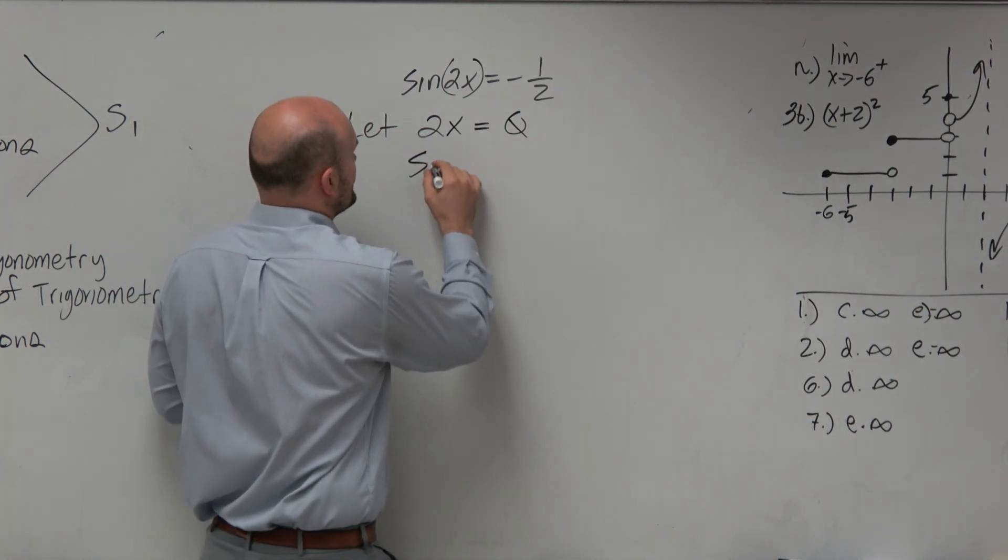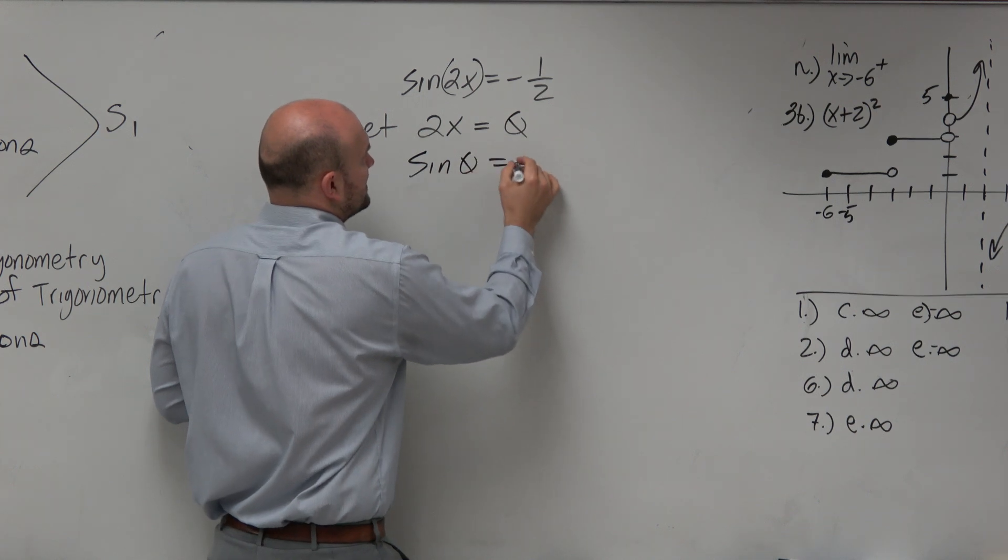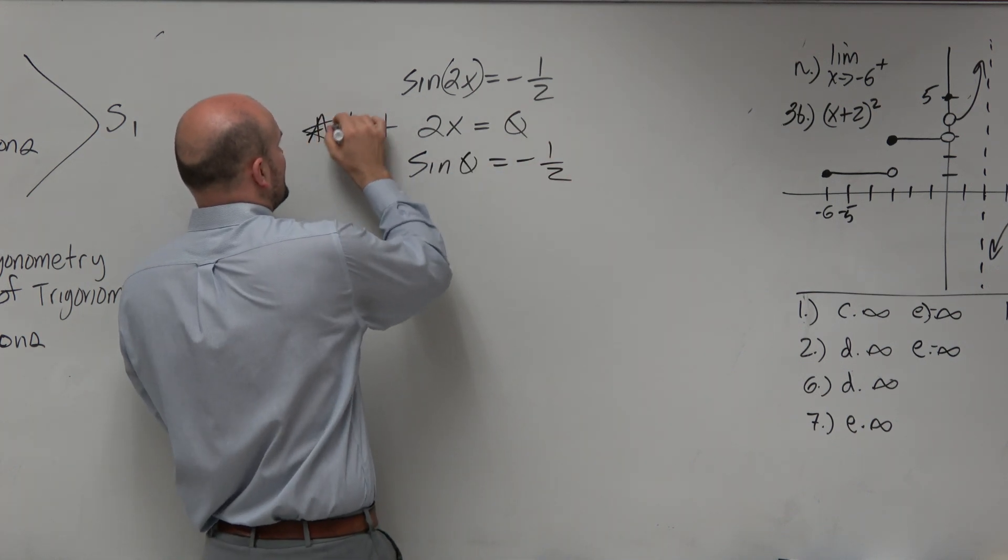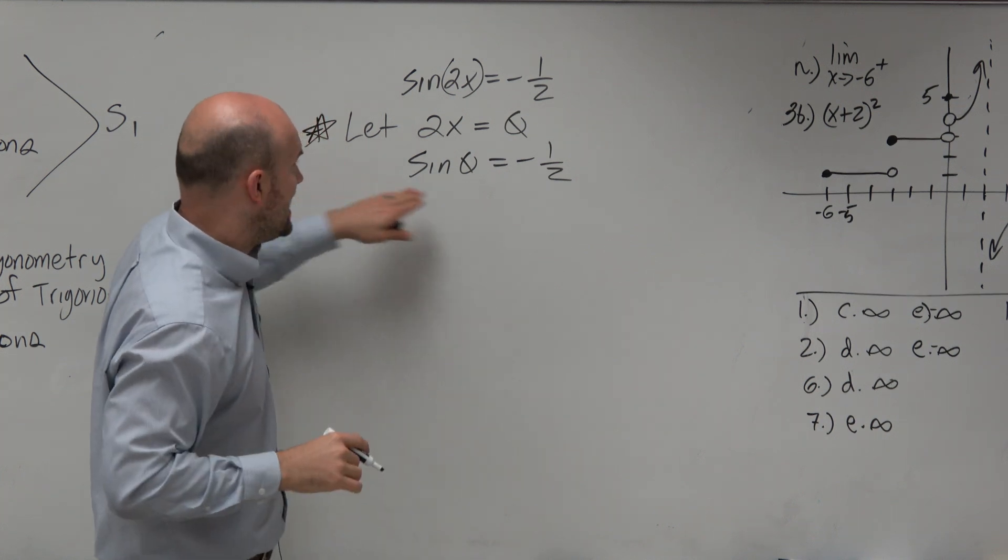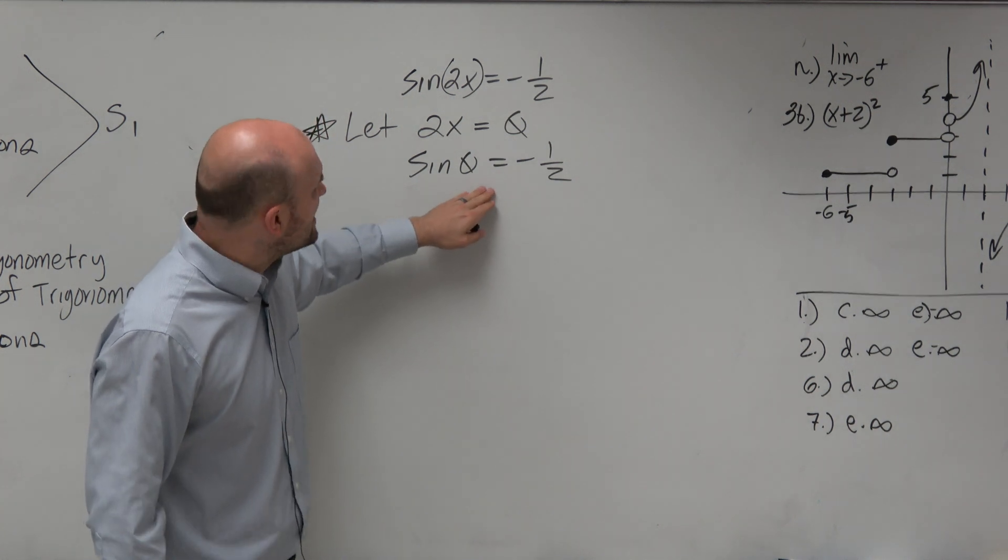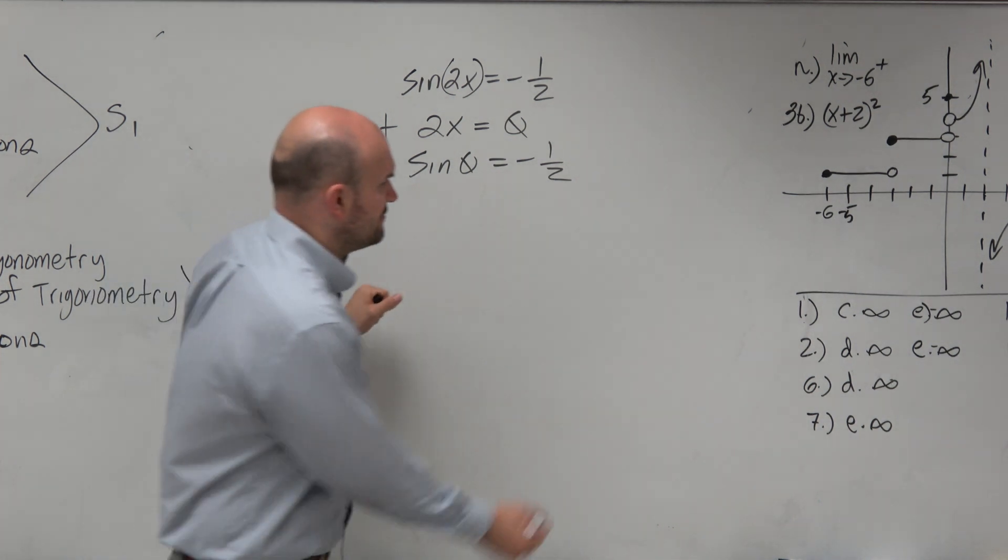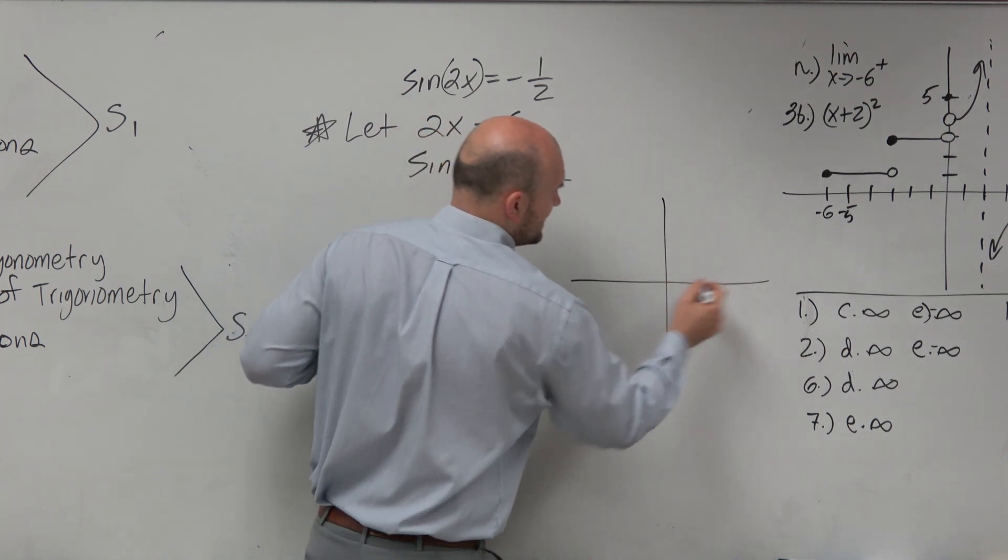So then I'm just going to rewrite the problem as sine of theta equals negative 1 half. Now again, we don't want to forget this, all right? But now I'm just going to use this to solve. So I say sine of theta equals negative 1 half. Well, I got to figure out when is sine negative.